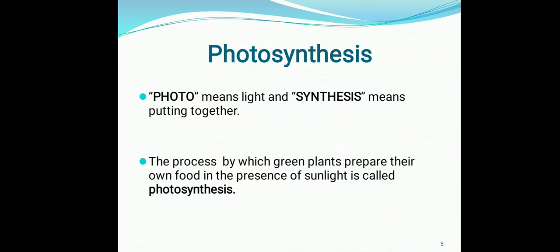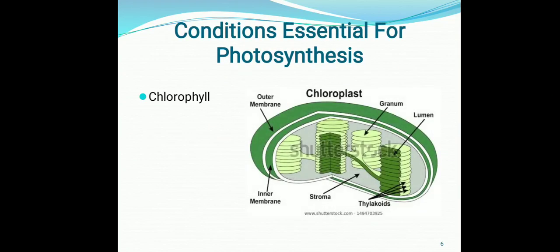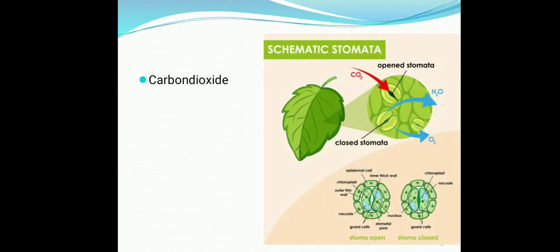Now I am telling you some of the essential conditions for photosynthesis. The first one is chlorophyll. In green plants, there is a chloroplast cell. Inside this chloroplast, there is a granum structure. Granum contains the chlorophyll. The main purpose of chlorophyll is to absorb the sunlight. The second essential condition for photosynthesis is sunlight. The third essential condition is carbon dioxide, which is taken by the plant through the stomatal opening.